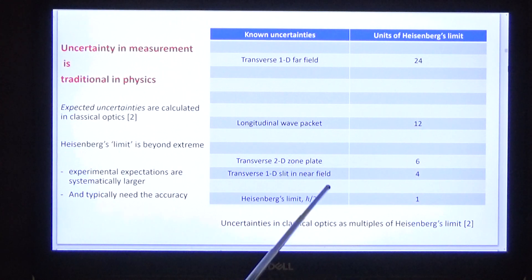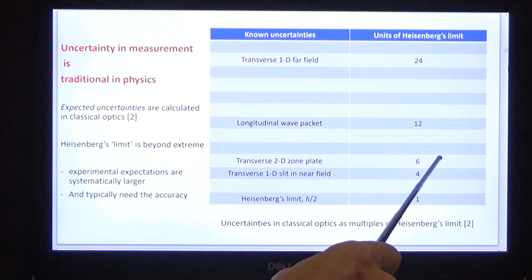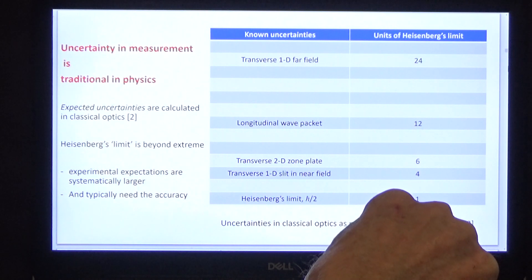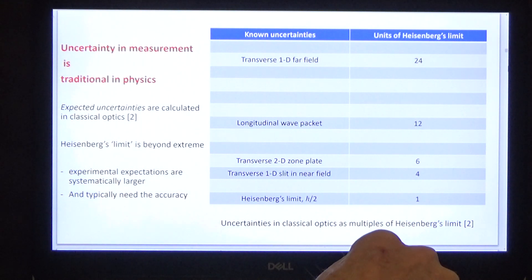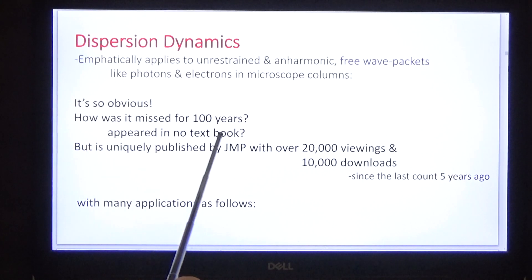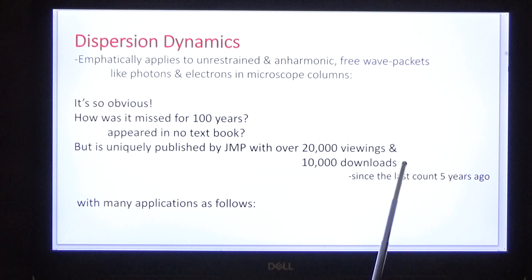Notice that Heisenberg's limit is beyond even the extremes calculated in the 19th century by classical optics. It's not useful to experimenters because they need to know expected uncertainties, not arbitrary limits. It's so obvious — dispersion dynamics. How was it missed for a hundred years, appeared in no textbooks, but is now uniquely published by the Journal of Modern Physics with over 20,000 viewings and 10,000 downloads and counting since the last count five years ago.